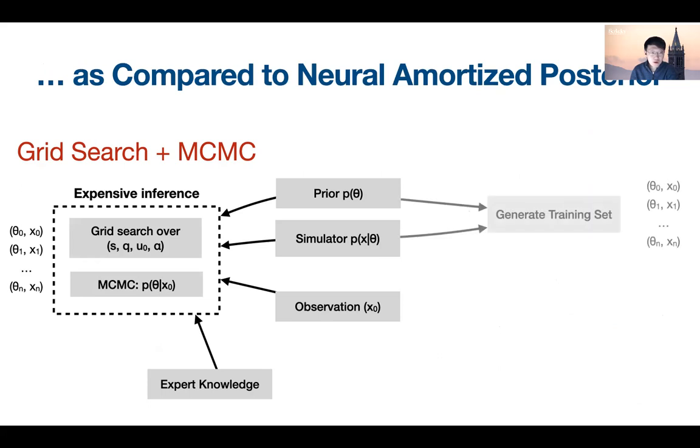So under our new approach, we first make a reasonable number of simulations with parameters drawn from the prior. Then we use a neural density estimator, or NDE, to learn the posterior p of theta given x as a distribution parameterized by the observation. A neural density estimator is basically a neural network that is capable of learning distributions from samples of that distribution, which in this case are the theta and x pairs.